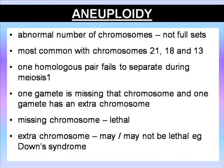The first thing I'm going to talk about is aneuploidy, which is an abnormal number of chromosomes. It is most common with chromosomes 21, 18, and 13. One homologous pair fails to separate during meiosis — one gamete is missing that chromosome, and one gamete has an extra copy. A missing chromosome is lethal, and an extra chromosome may or may not be lethal. The example is Down syndrome.